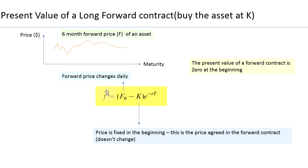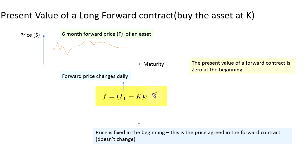The present value of your futures contract is simply the difference between the forward price in the market — in other words, what does the market think the December corn price is going to be — minus what you agreed when you entered into the contract, K. Then you multiply the whole thing by the exponent of minus the risk-free interest rate times time to maturity, because both values occur in the future and need to be discounted to today.